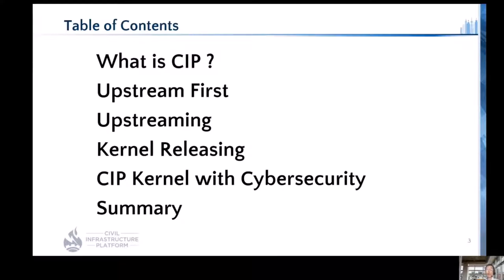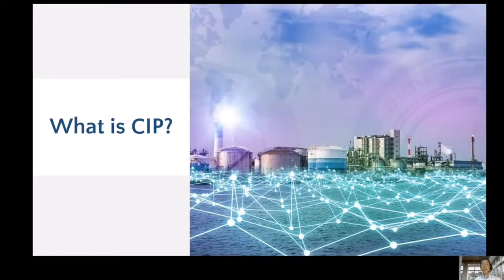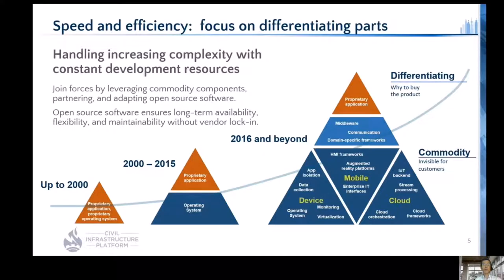CIP stands for Civil Infrastructure Platform. It was founded almost four years ago under the Linux Foundation. When you hear civil infrastructure, you may imagine heavyweight systems like power plants — that is true — but there are a lot more around us. Even industrial IoT devices can be categorized into civil infrastructure.